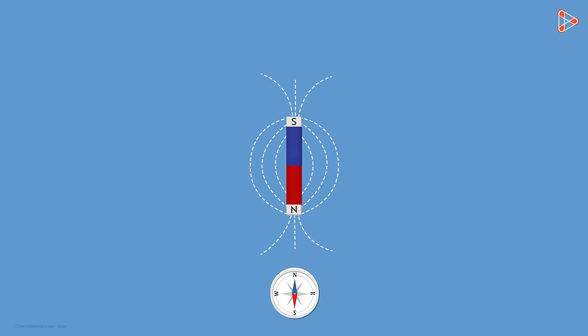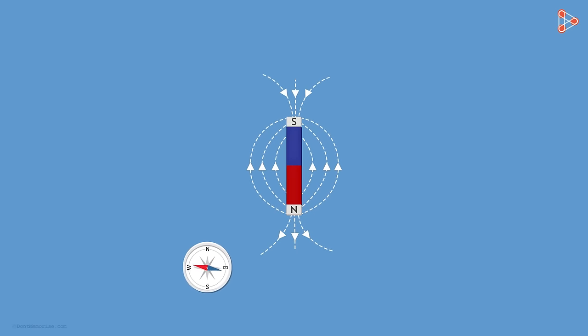We know that in a bar magnet, the field lines emerge from the north pole, curve around the magnet and end at the south pole. So if we move the compass in the direction of the magnetic field, then its needle will also align itself in the direction of the field.